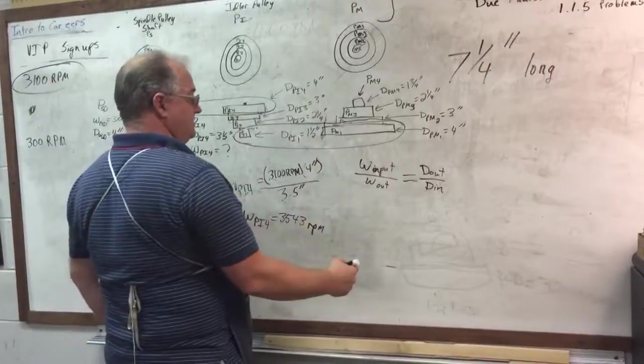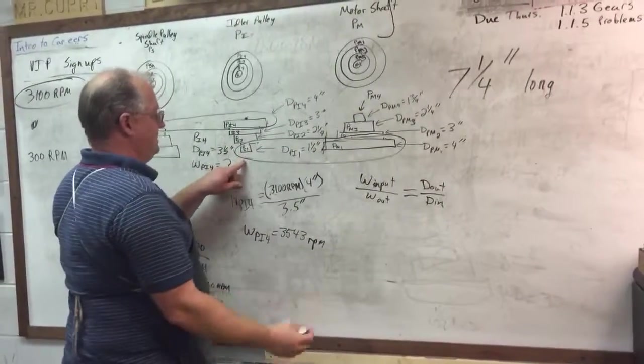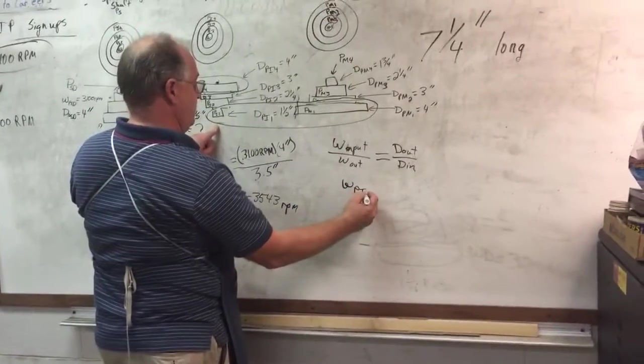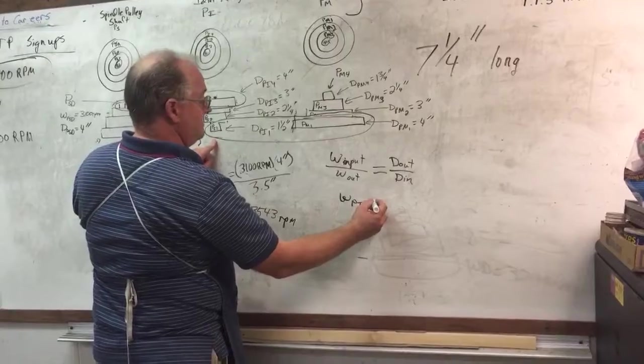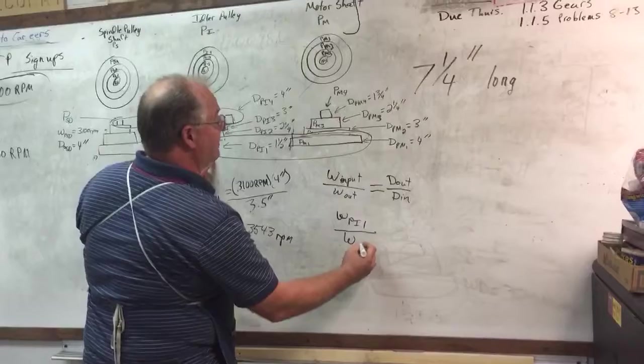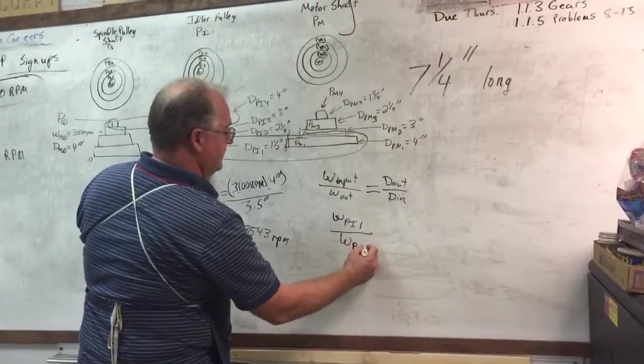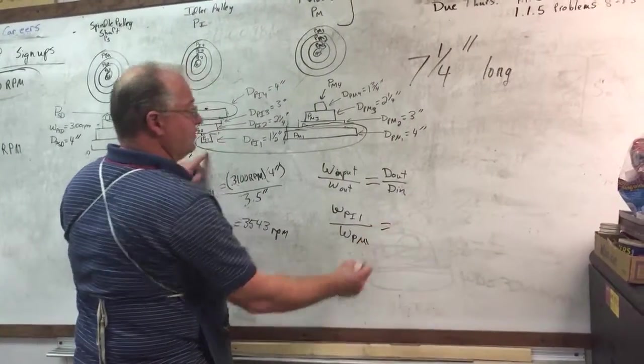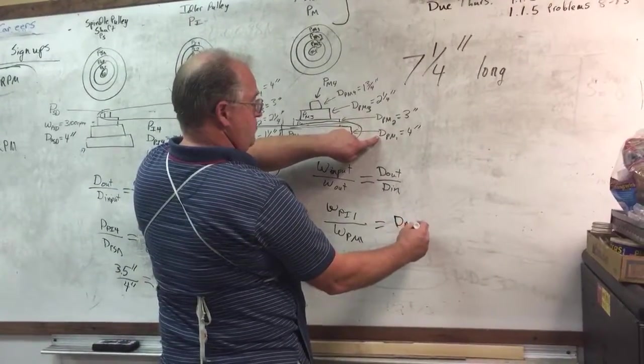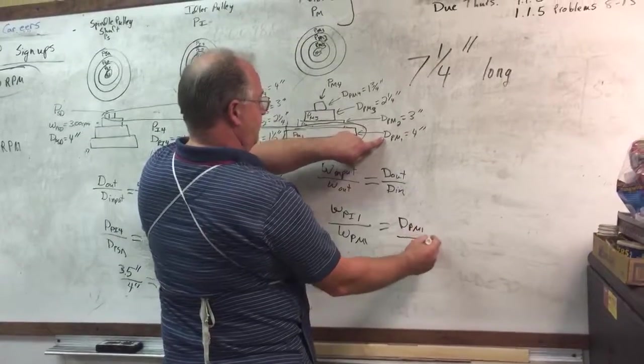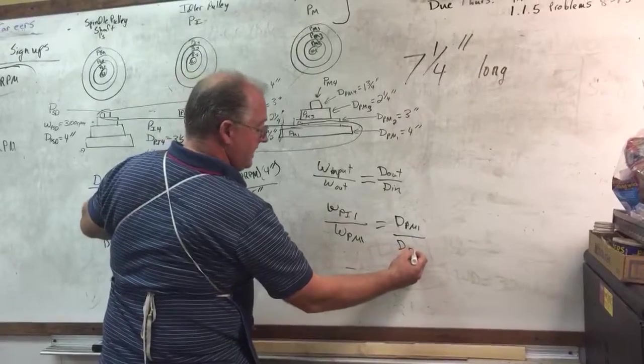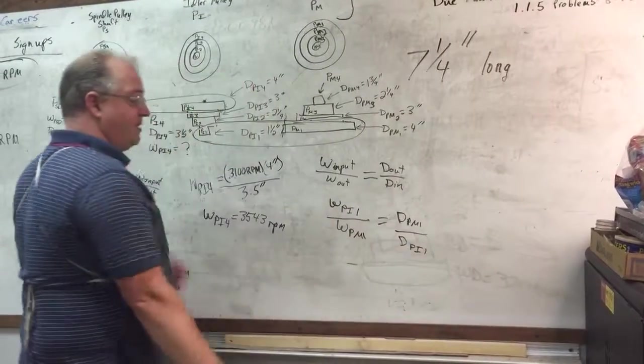So now I'm going to substitute here. So my W input is my W of PI1 over my output, which is my W of PM1. And that equals my diameter of PM1 over my diameter of PI1. All right, so there's my formula.